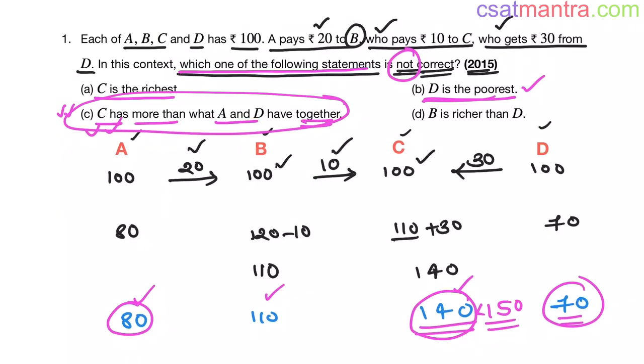Let's check option D. B is richer than D. Yes, B is richer than D. 110 is greater than 70. So B is richer than D. So our answer is C, my friends.